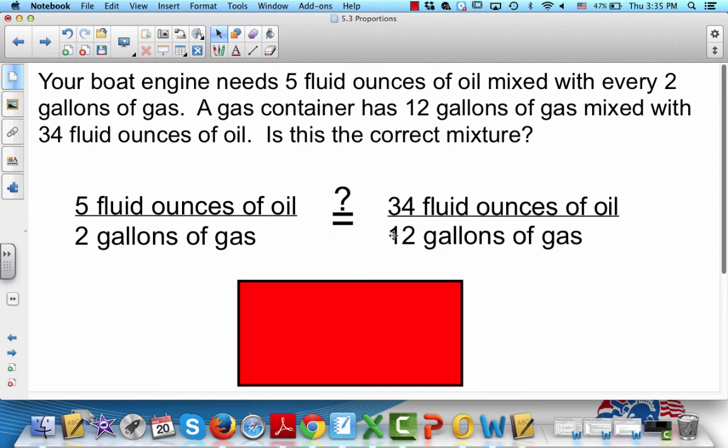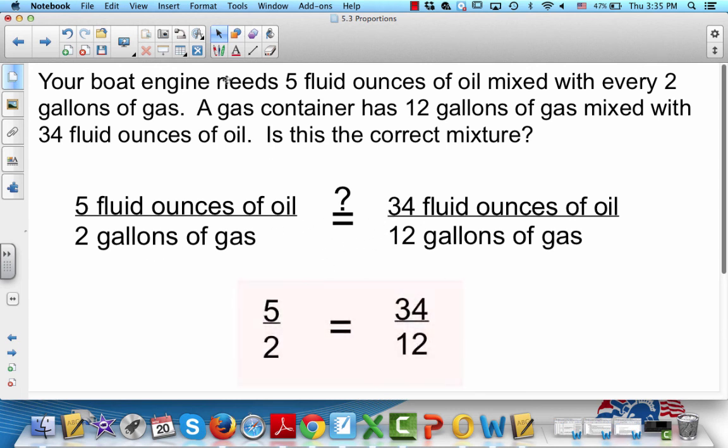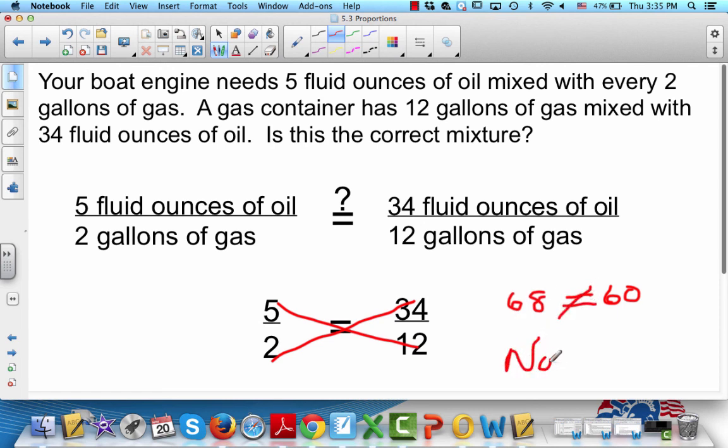So how do we do this? We go 5 times 12 and 2 times 34. 5 times 12 is what? It's 60. 2 times 34 is 68. Those are not equal, so that means no. No, this does not form a proportion and you do not want to use this mixture in your boat because it will mess it up.